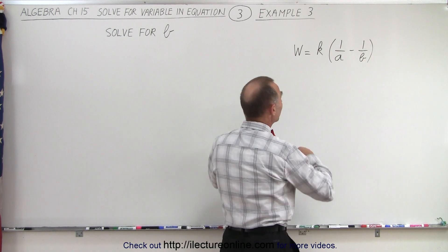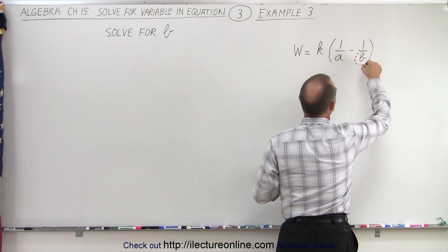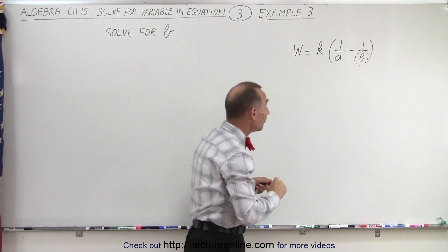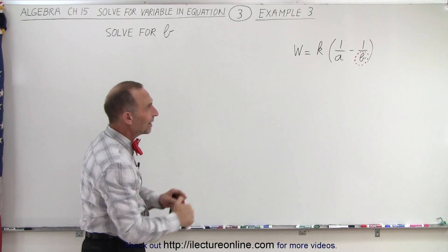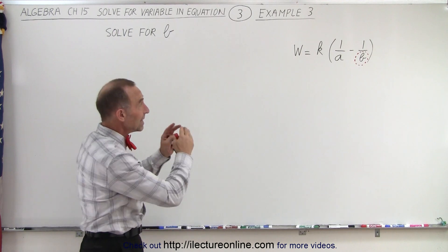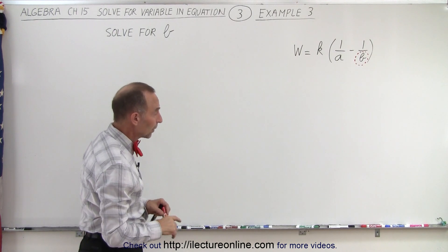So again, to make things a little bit simpler, we're going to go ahead and circle the variable that we're looking for to get a better visualization. So how do we isolate b? Essentially we want to have b equals everything else.